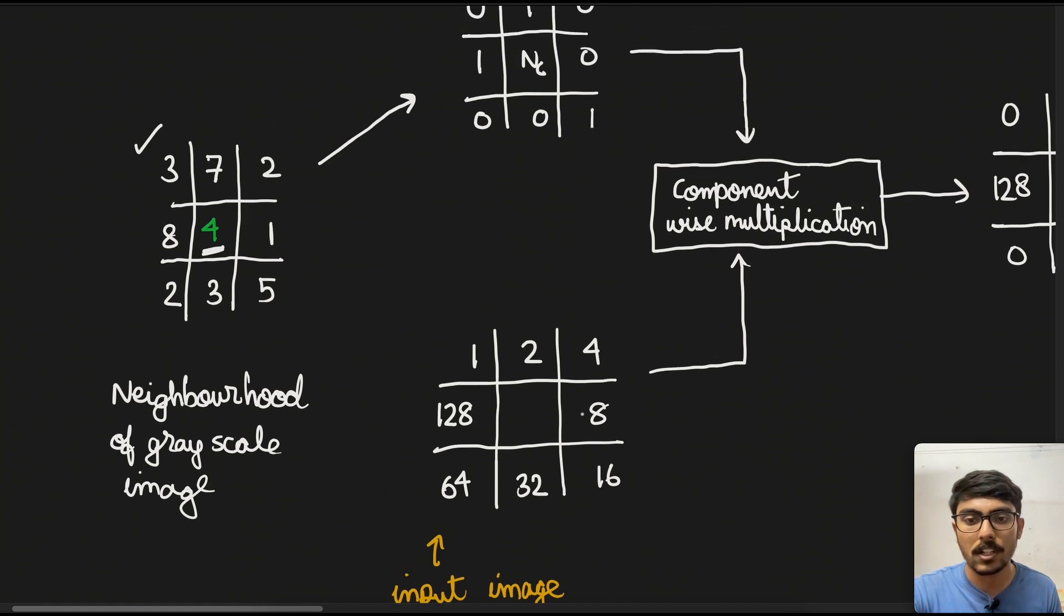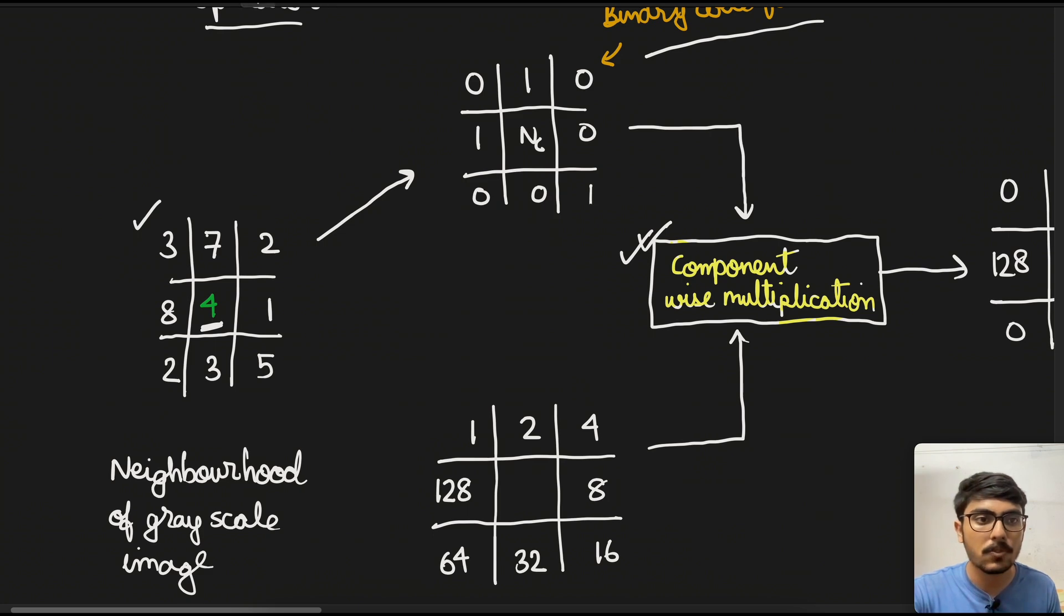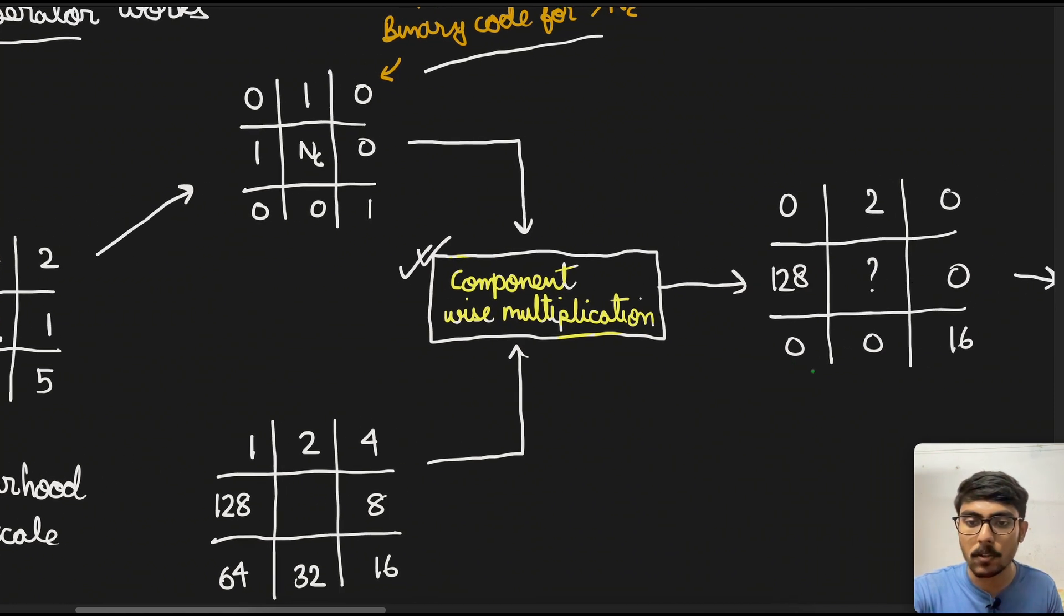We will use component-wise multiplication. This is very important. We will be using component-wise multiplication to perform the LBP operation. In that case, we will multiply this two with this one. Then we will multiply 128 with this one. Then we will multiply 16 with this one. All the ones will get multiplied to their corresponding matrix positions in the input image.